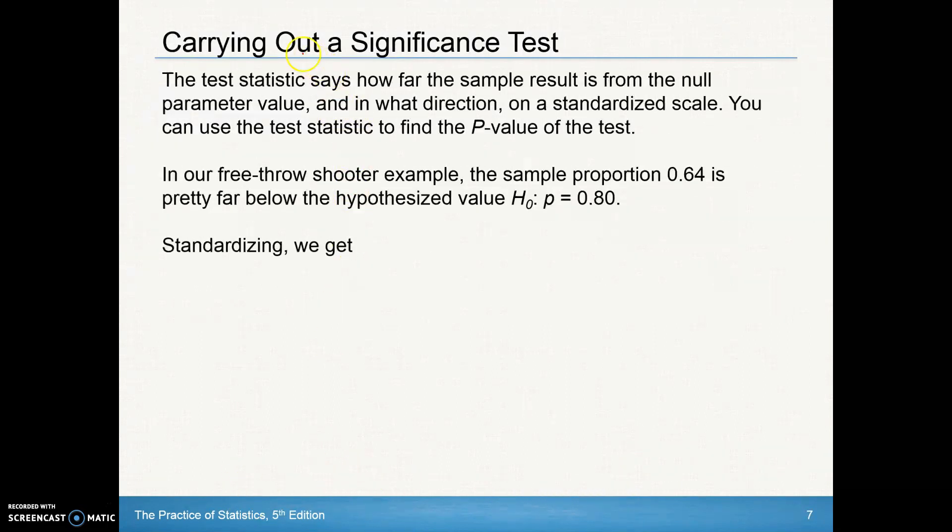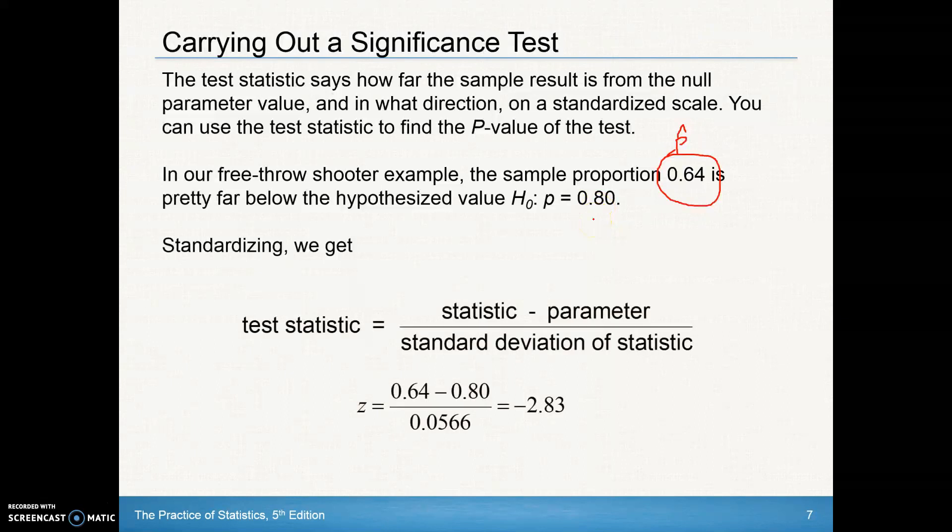So in our free throw shooter example, the sample proportion is 0.64. That was our sample. That was our p hat. It's pretty far below the hypothesis value of 0.80. And if you go through standardizing that test statistic, again, you would see there is our p hat. Right here is our p hat minus our p, and that was the standard deviation that was calculated earlier. And that's how we get a z-score of negative 2.83. So it's negative 2.83 standard deviations away from the hypothesis value of 0.80.